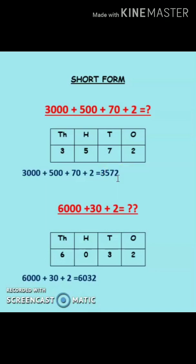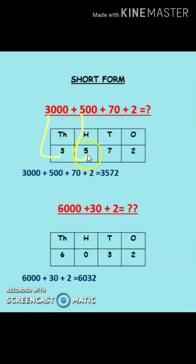The other way is to arrange by specifying positions. Write thousands, hundreds, tens, and ones, then assign positions: three thousand goes under thousands place, five hundred under hundreds place, seventy under tens place, and two under ones place. So the number becomes three thousand five hundred seventy-two.